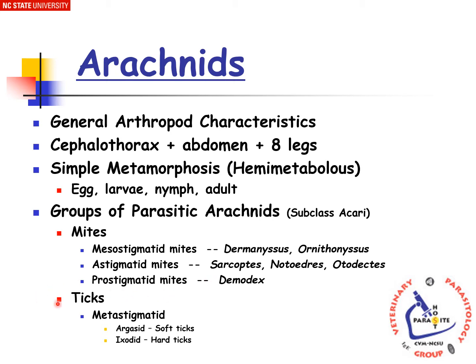For the ticks, the taxonomy places them in the phylum Arthropoda, class Arachnida, subclass Acari, superorder Parasitiformes, order Ixodida, and the superfamily Ixodoidea. Under this, we have the suborder Metastigmata, which is subdivided into two families: the Ixodidae and the Argasidae. The Ixodidae is also known as the hard ticks, while the Argasidae family is also known as the soft ticks.